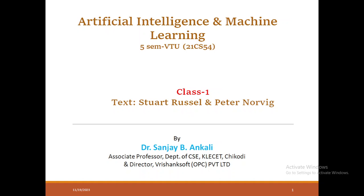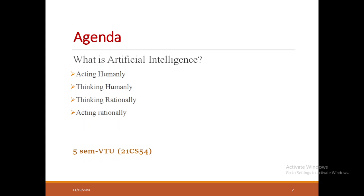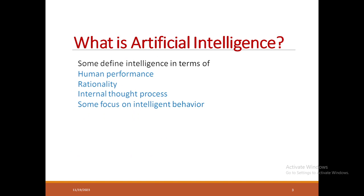Good morning everybody. Let us start with class 1 of Artificial Intelligence and Machine Learning. In today's class we will define AI in terms of acting humanly, thinking humanly, thinking rationally and acting rationally.